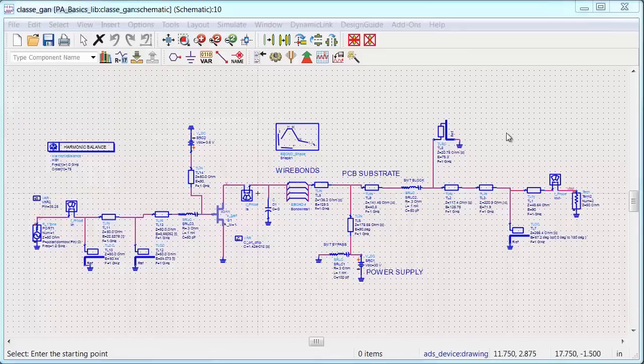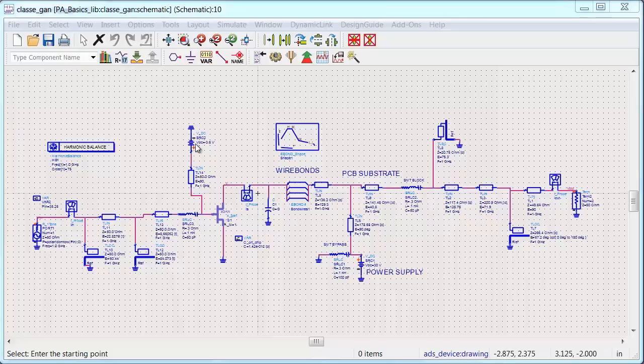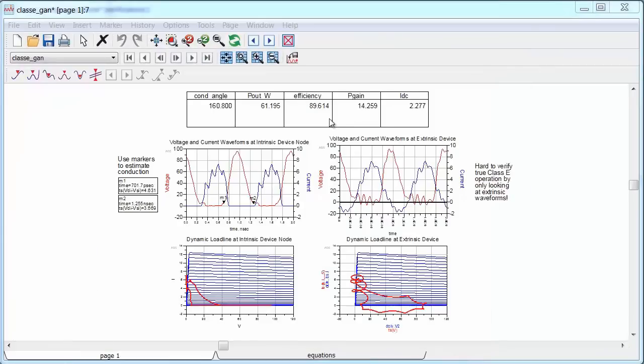So that covers the output, and after that I conjugate matched the input to 50 ohms and adjusted the gate bias to lower the conduction angle. And I ran the simulation, and here are the results for the full gallium nitride PA.